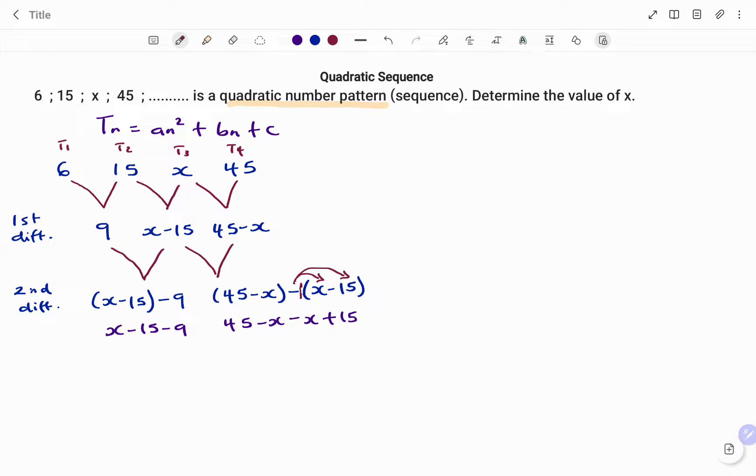Because it's a quadratic number pattern, we know that the second difference is the same, so therefore the term on my left must be equal to the term on my right. To simplify further, we have x minus 15 minus 9, that's minus 24, equals 45 plus 15, that's 60 minus 2x.